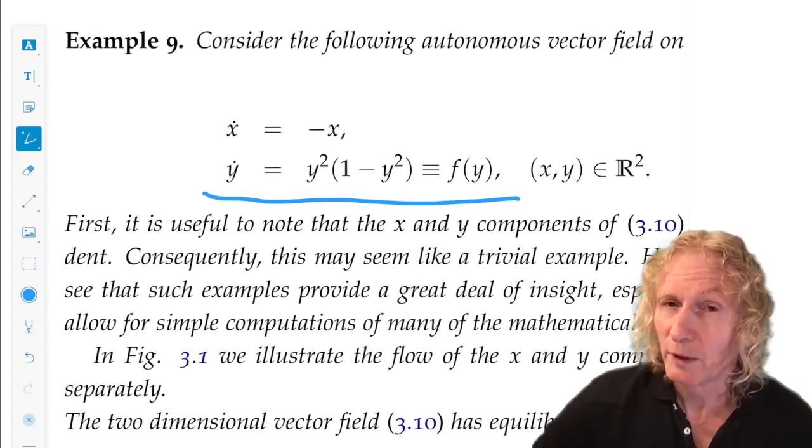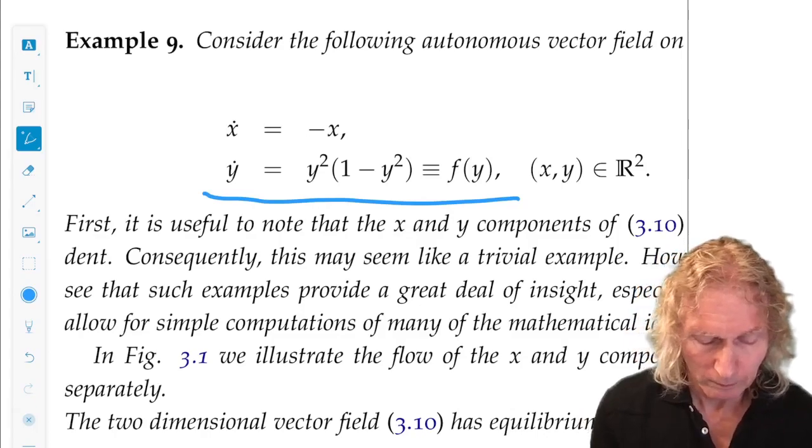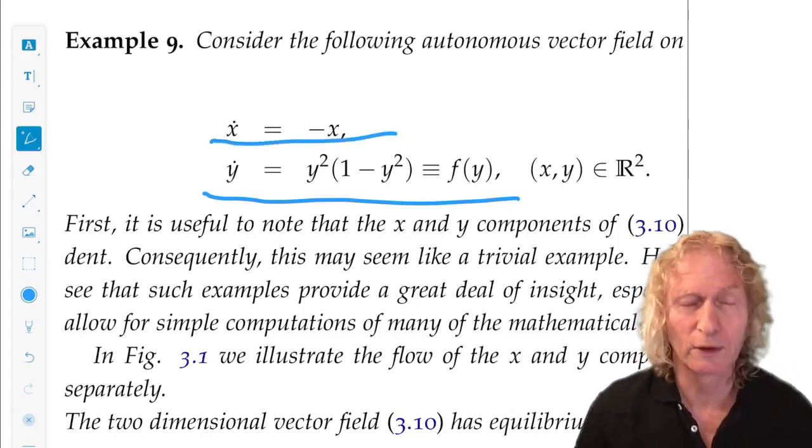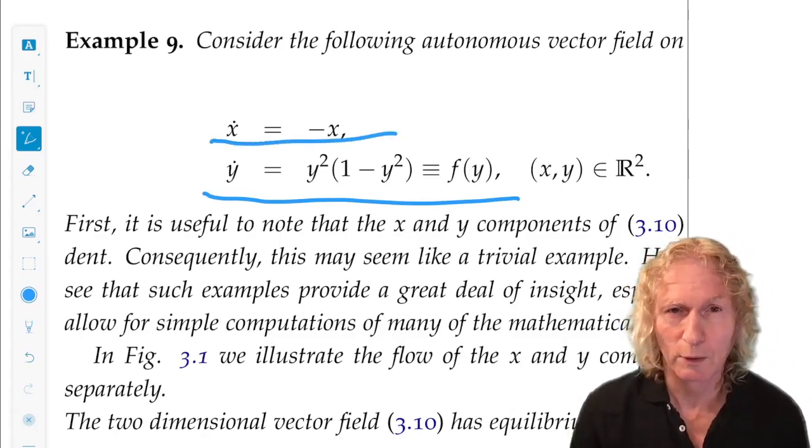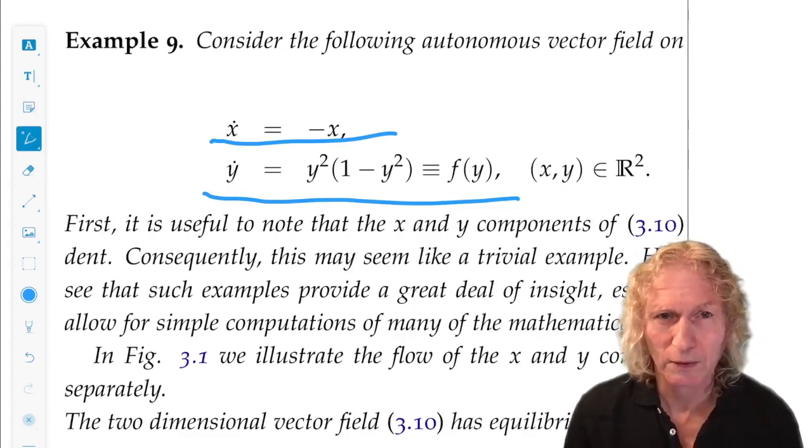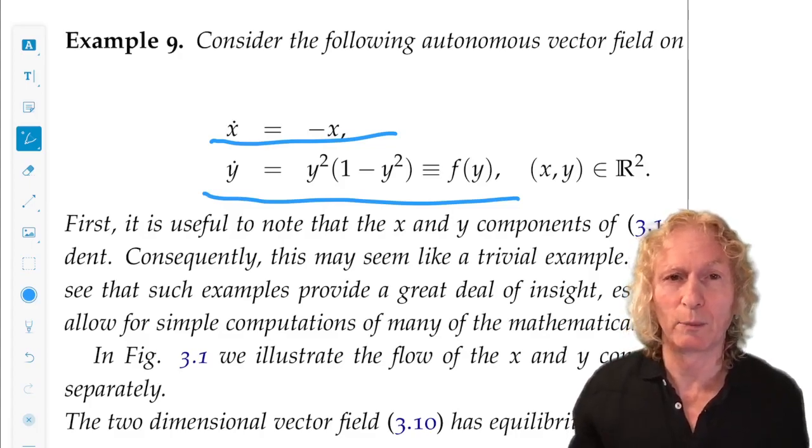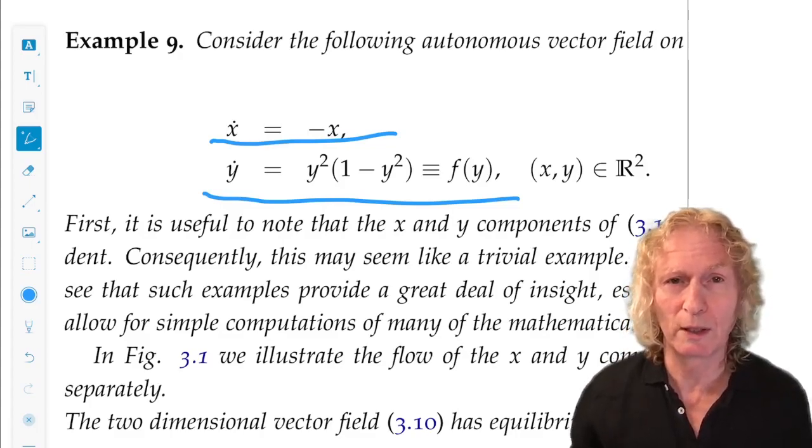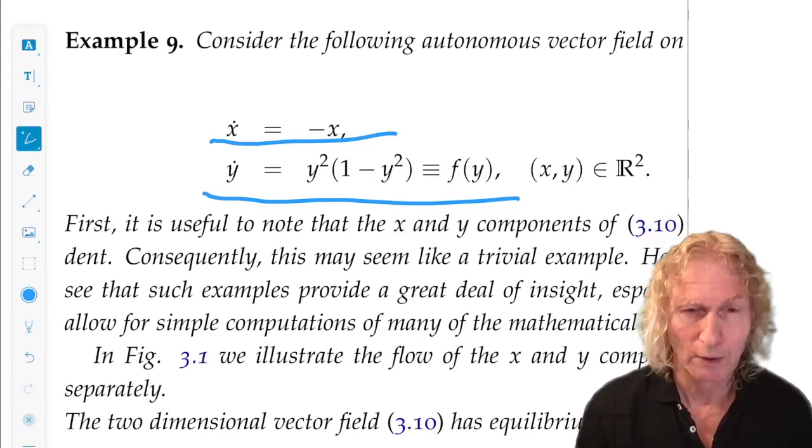So if I set x equals zero, you see that x dot equals zero. So setting x equals zero means I'm on the y-axis. So if I start on the y-axis, I stay on the y-axis because the x component cannot change. So that's one line.